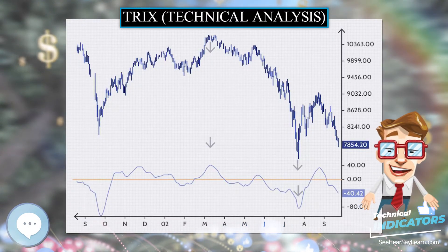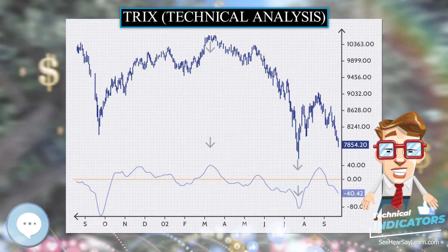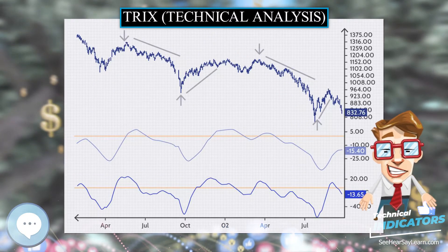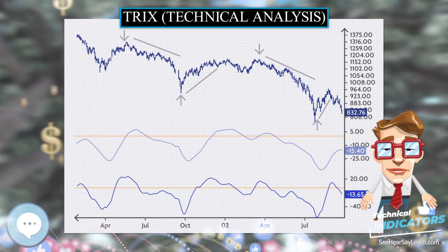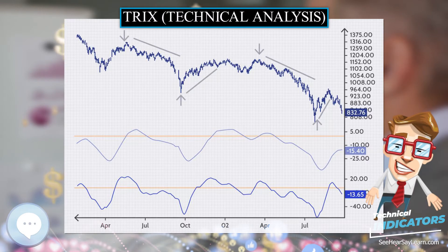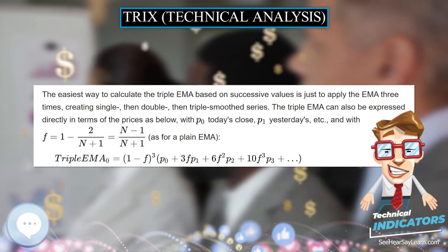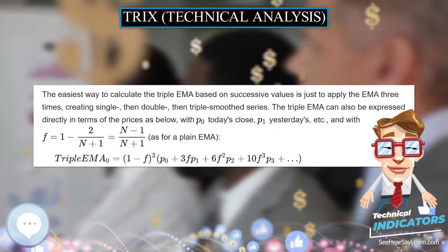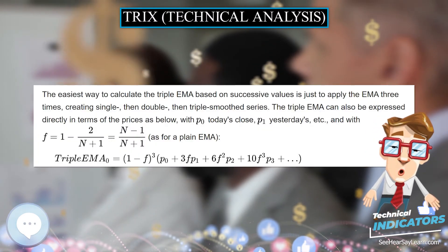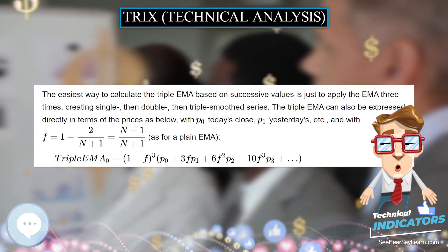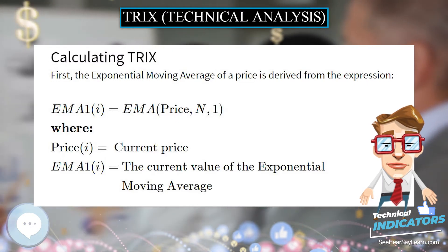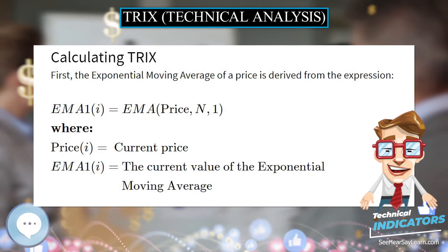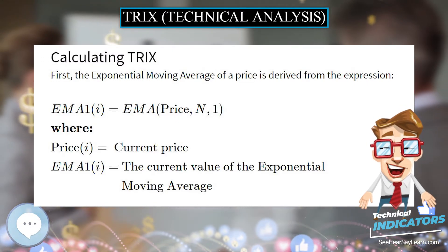The easiest way to calculate the triple EMA based on successive values is to apply the EMA three times, creating a single, then double, then triple smoothed series. The triple EMA can also be expressed directly in terms of the prices.